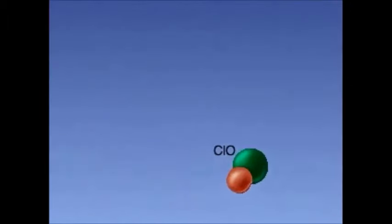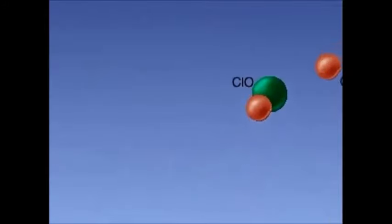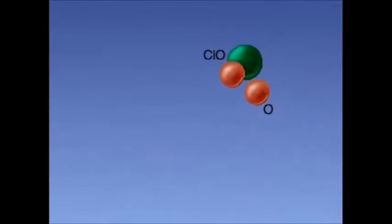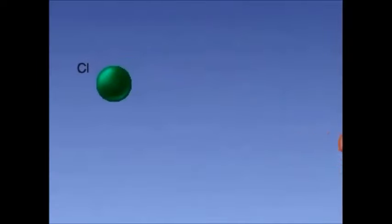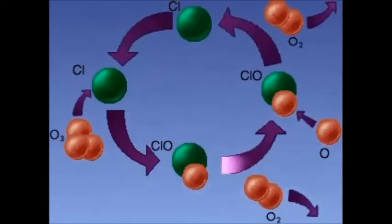Then the oxygen atom in the resulting chlorine compound is pulled off by an oxygen atom. The chlorine is now free to start the cycle of ozone destruction all over again. One molecule of CFC can destroy 100,000 ozone molecules.